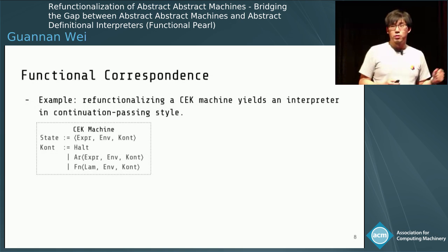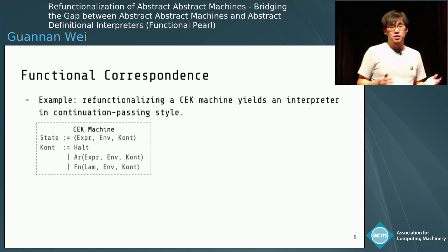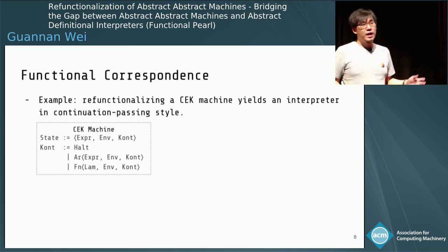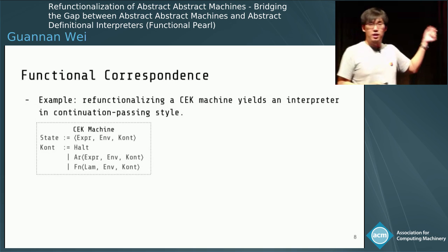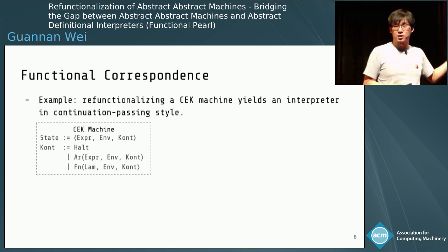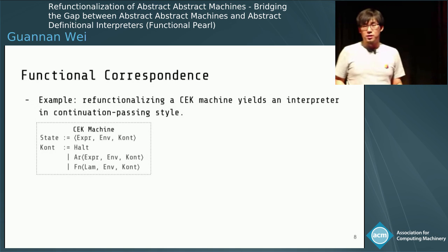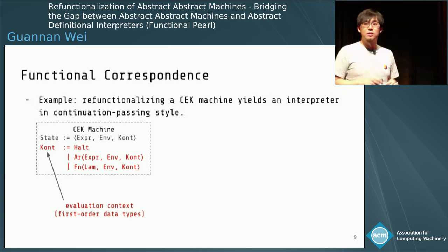For example, if we refunctionalize a CEK machine, we obtain a CPS interpreter. The CEK machine is a state transition system where the state has three components. The first is the expression, which is basically the abstract syntax tree of the program. The second is the environment, a mapping from variables to values. The third is the continuation, which is defined as a data type with three variants.